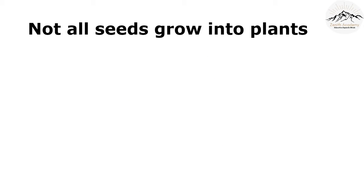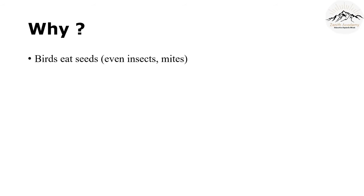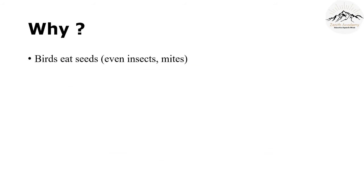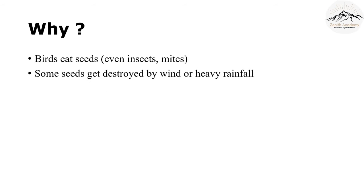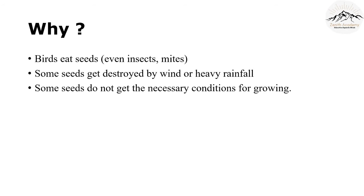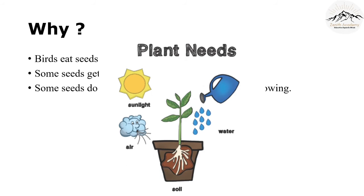Not all seeds grow into a plant. Birds consider seeds their food and eat them. Some seeds get destroyed by wind and heavy rainfall — even humans can be carried away in heavy rainfall, so how will a tiny seed survive? Some seeds do not get the necessary conditions for growing. A plant needs sunlight, water, air and soil; otherwise the seed won't germinate.